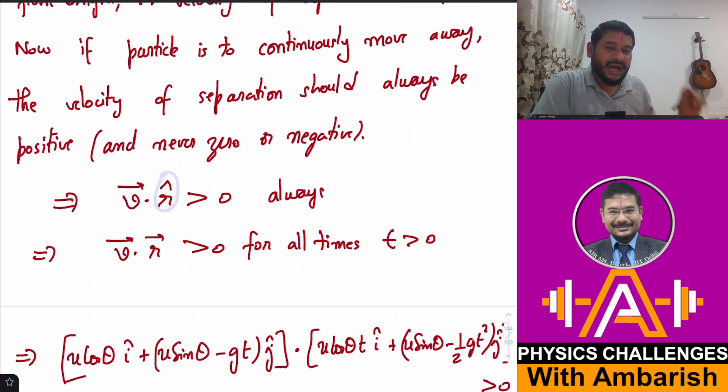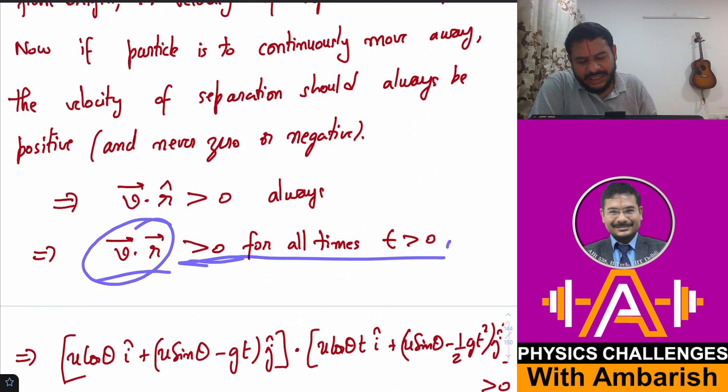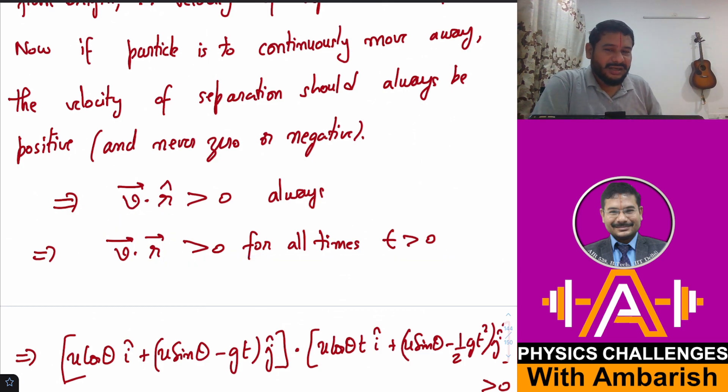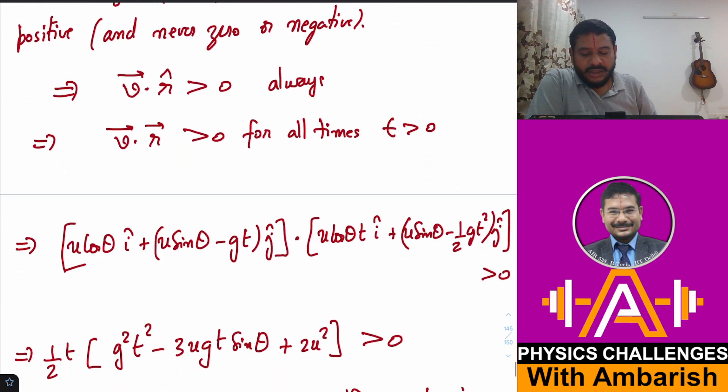But you know that the magnitude of any vector is positive, so instead of taking dot product with r̂, I can also take dot product with r⃗ itself. If v⃗·r̂ > 0, then v⃗·r⃗ > 0 also. I'll be doing this for ease of mathematics. What is the velocity vector? v⃗ in the horizontal direction is u cos θ î always, and in the vertical direction it is (u sin θ - gt) ĵ.